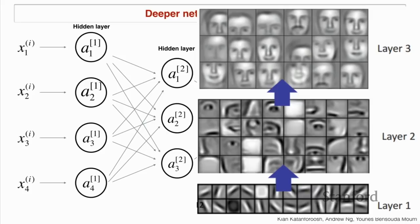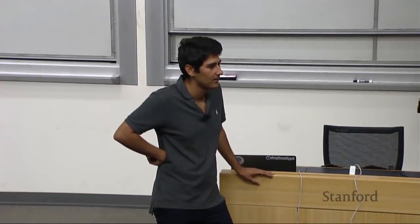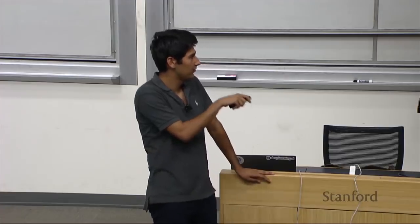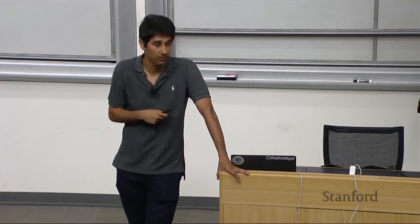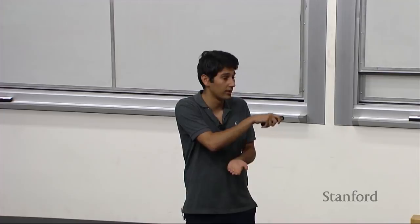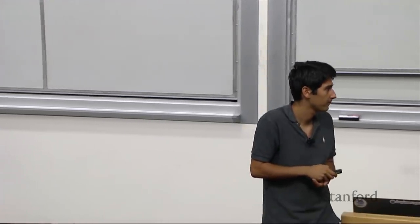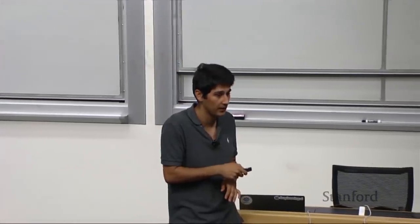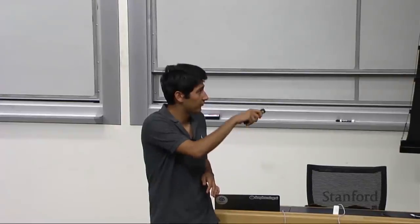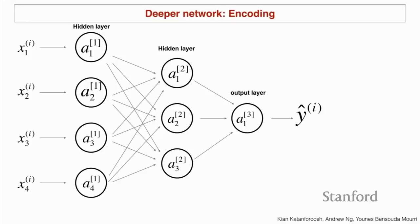Does this only apply to convolutional neural networks? These types of visuals are more observed in convolutional neural networks because these are filters, but this happens also in fully connected networks — it's just harder to visualize. This is what we call an encoding: if I extract the information from a layer — all the numbers coming out of those edges — I will have a complex representation of my input data. If I extract numbers from the end of the first layer, I will have a lower-level representation, like edges. We're going to use these encodings throughout this lecture.